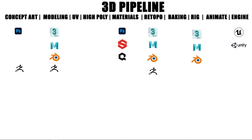The first phase is concept art. The concept art is about idea generation — creating the characters, creating the world, creating the environment. Once that's done it can go into the modeling phase.